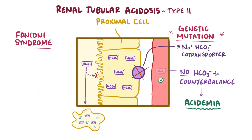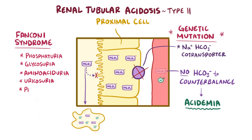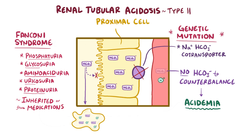In Fanconi syndrome, in addition to loss of bicarbonate, there's also phosphaturia, glycosuria, amino aciduria, uricosuria, and proteinuria — the loss of phosphate, glucose, amino acids, uric acid, and protein in the urine. Fanconi syndrome can be inherited, but can also be acquired; for example it can be a side effect of certain medications like tetracycline class antibiotics.